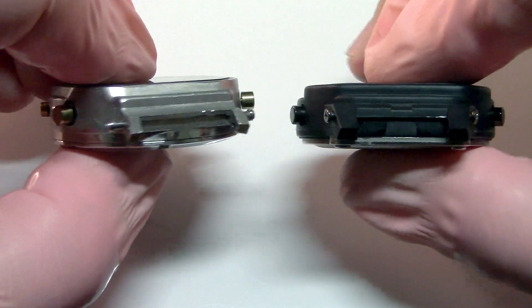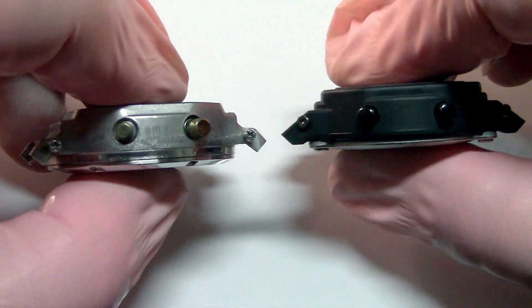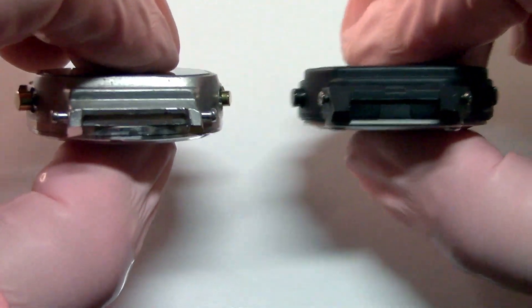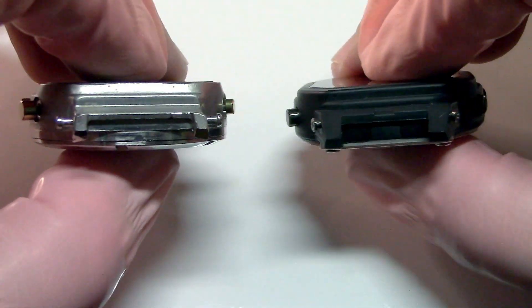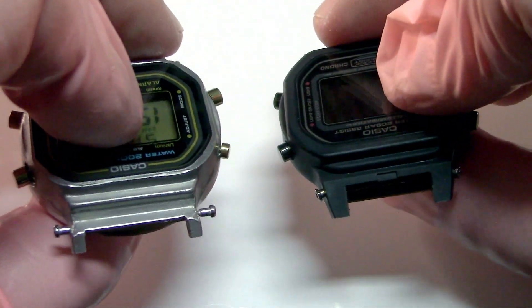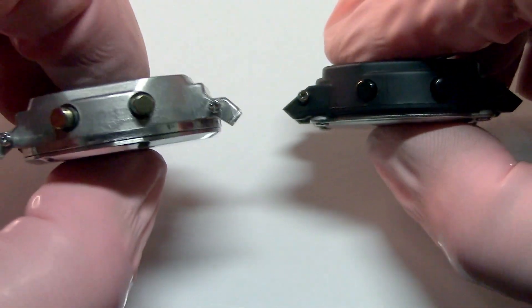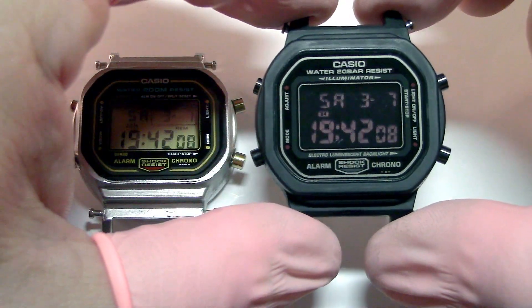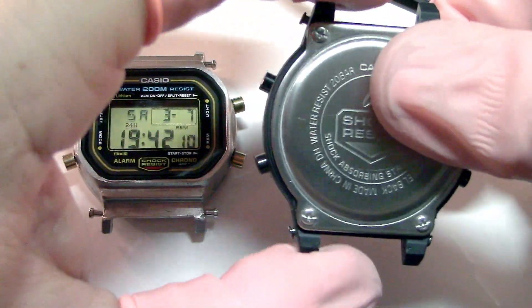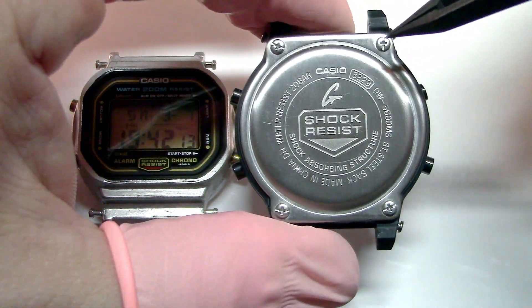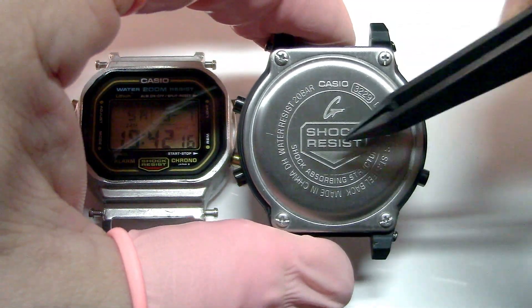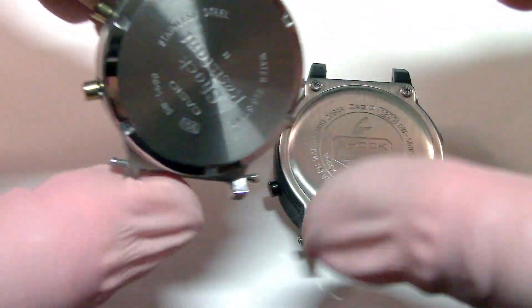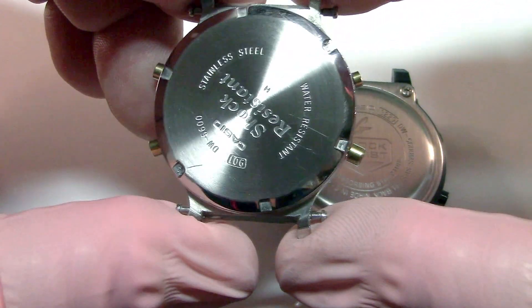But despite this, the outer shield or the bezel, if you want to call it like this, it doesn't fit one or the other. They are not interchangeable. They look almost similar, but there are very small differences in size that doesn't let you fit one with another. Another thing that you will notice right away is that the case back on the plastic model uses four screws to keep the case back in place while the steel one is a screw-in case back.